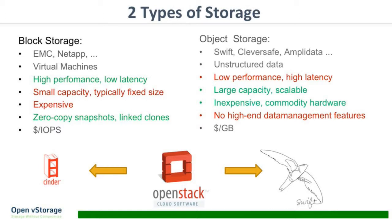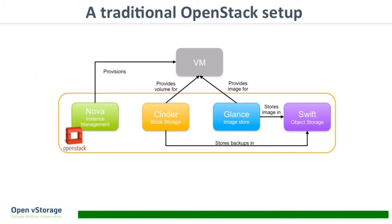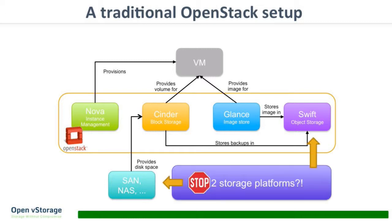OpenStack also has these two types of storage: the Cinder project for block storage, and Swift for object storage. In a traditional OpenStack setup, you have Nova for instance management, Cinder for block storage, and Swift typically for backups. But to make Cinder work, you need a SAN or similar to store Cinder volume data. That means managing two storage platforms — Swift as a scalable object store, and your SAN or NAS. That's kind of stupid. Why would you need to manage two types of storage?